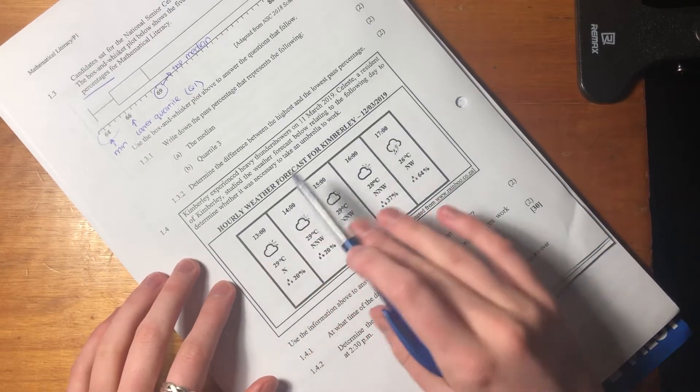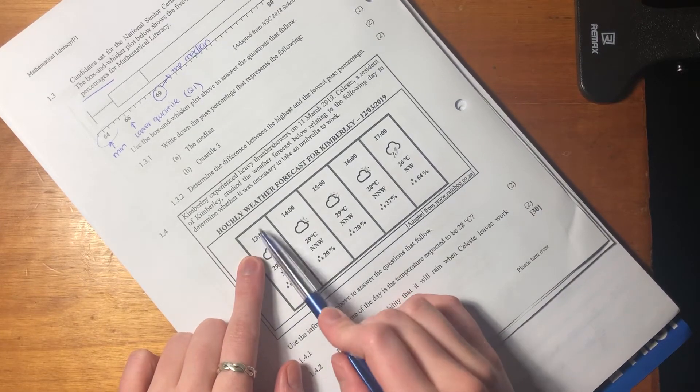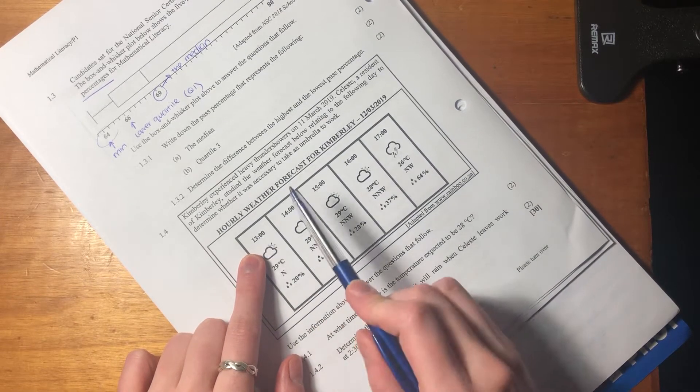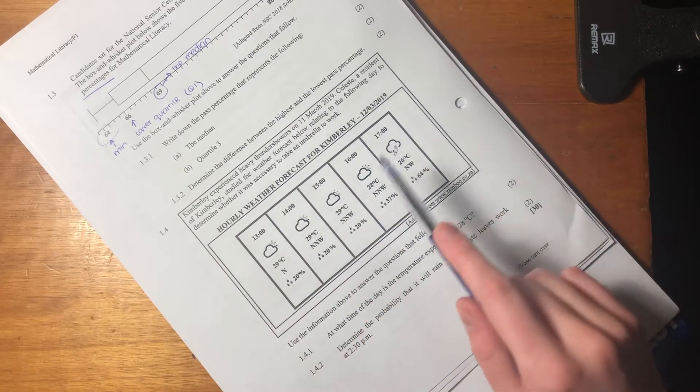So it says there, hourly weather forecast for Kimberly. So this is, remember, 13 means one o'clock in the evening, in the afternoon, two o'clock in the afternoon, three o'clock, four o'clock, five o'clock, right? So it's basically between one and five.